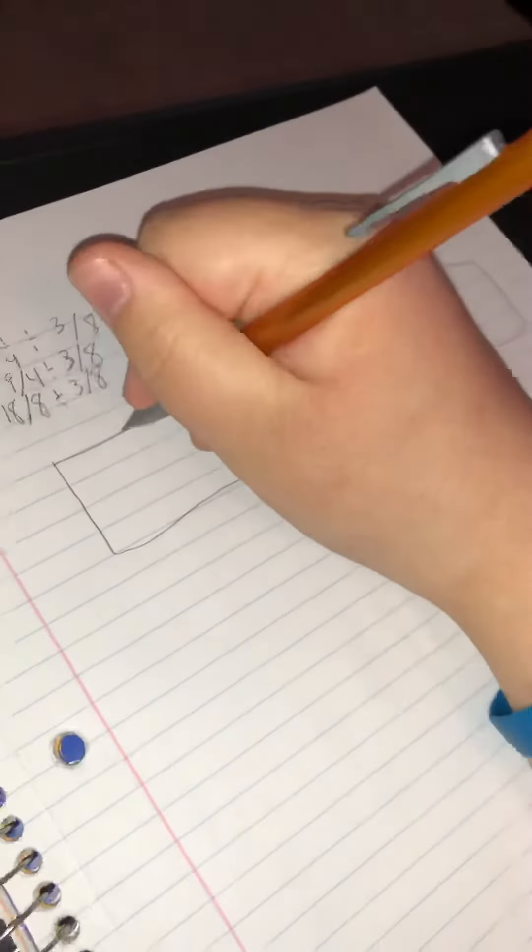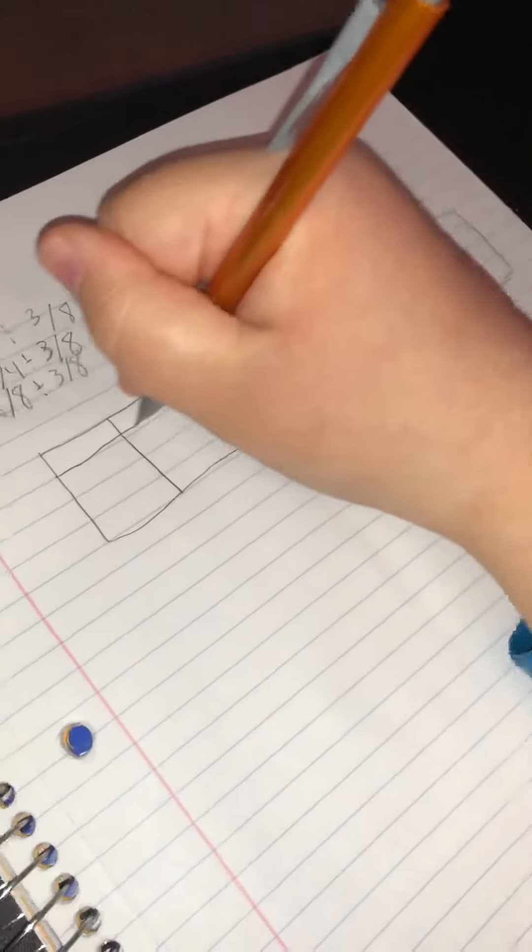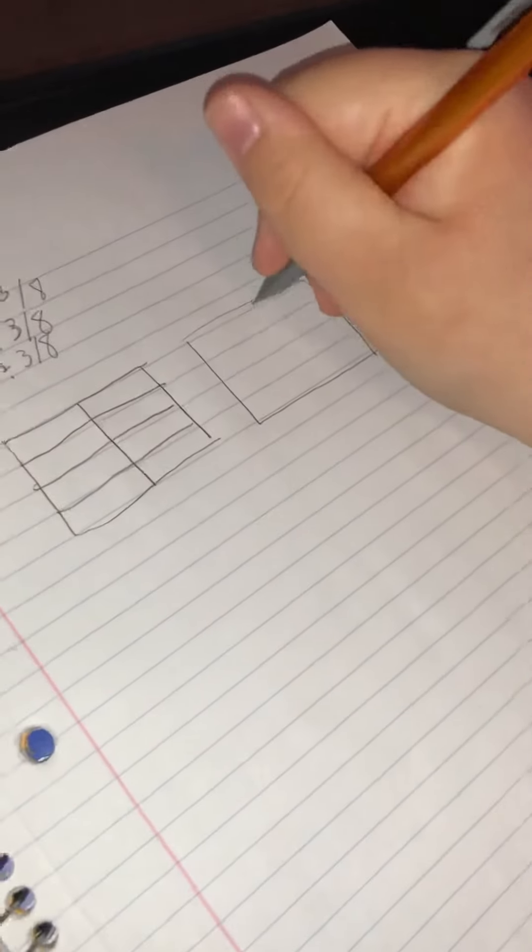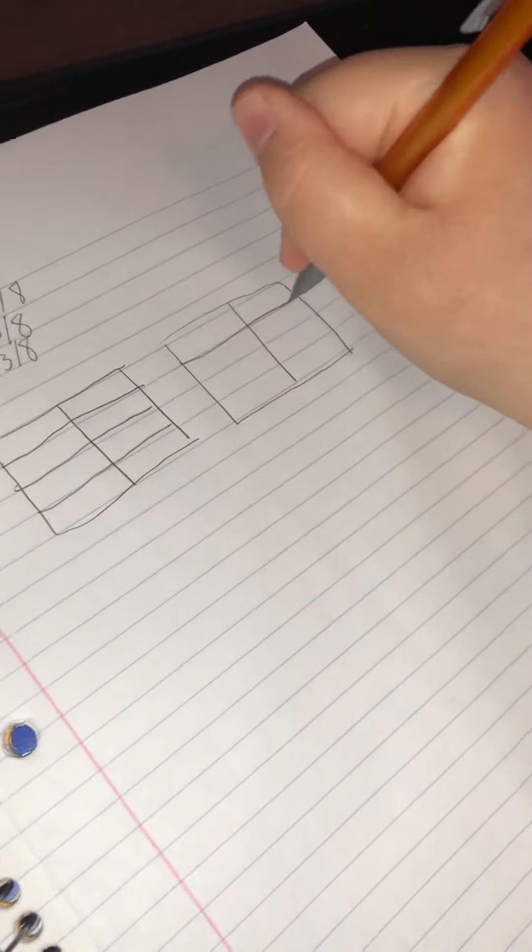Alright, so there's our division right there. Getting all our boxes in right now. Like I said, we're going to have 8 squares in each box.